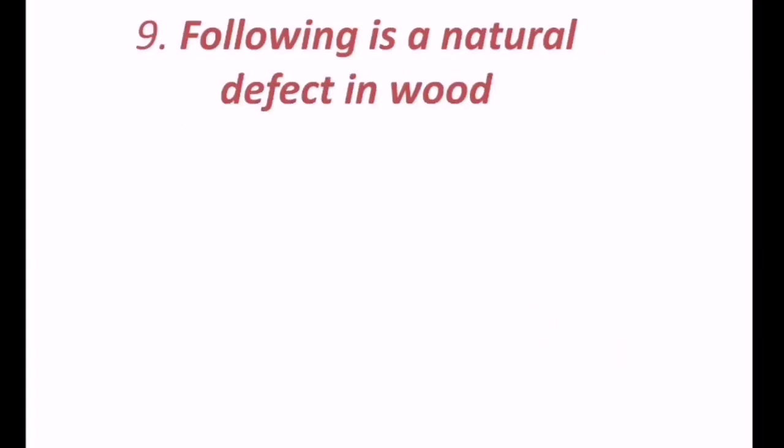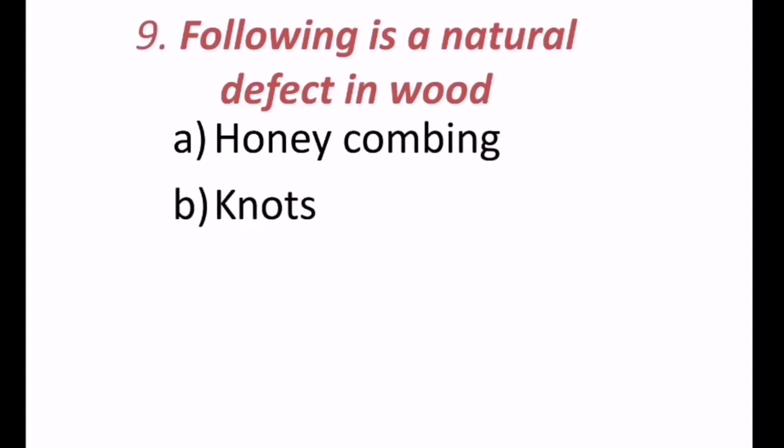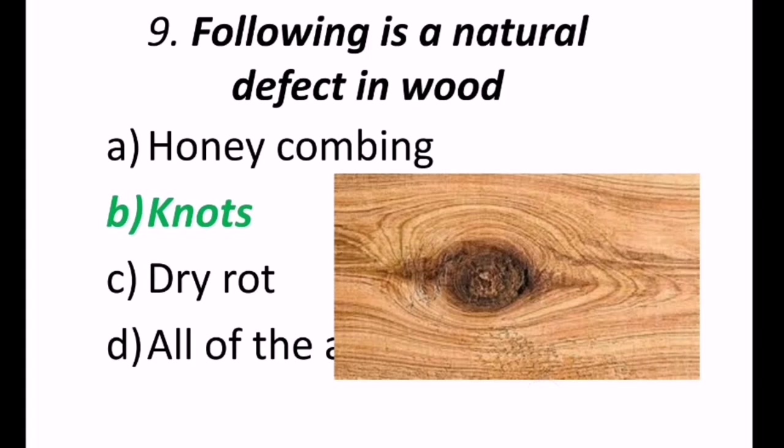9th question, following is a natural defect in wood. So may be honey combing, knots, dry rot, all of the above. The correct answer is, knots. So in this figure, we can see that, knot. So this is a defect in wood.